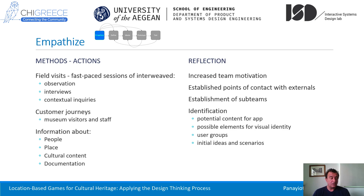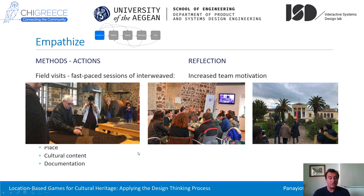Moving to the design thinking process: regarding the first step, the empathize phase, we conducted field visits. These were fast-paced sessions of interweaved observations, interviews, and contextual inquiries about how local experts and end-users — visitors of the museum — experienced their visits. We constructed several models in this phase, like customer journeys for museum visitors and staff. We obtained information about people, places, cultural content, and documentation from the museum. In these photographs, we can see how we visited the museum and the place, and talked with people there.